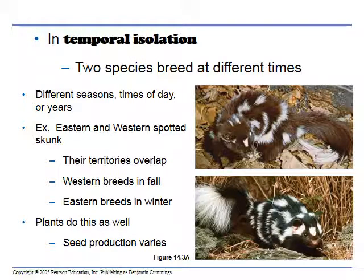Temporal isolation is where breeding occurs at different times. For example, the western skunk breeds in fall while the eastern one breeds in winter. Even where these species overlap geographically, their breeding cycles are different. The same applies to plants — seed production and pollen timing vary, and that's a prezygotic barrier that keeps things from mating.